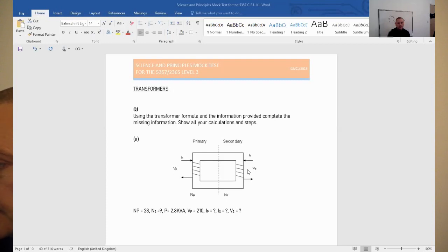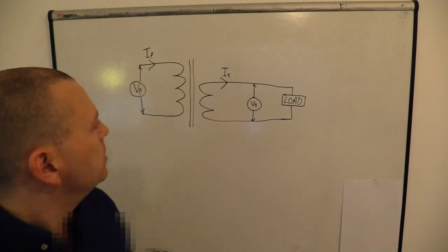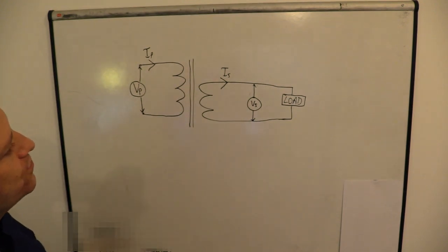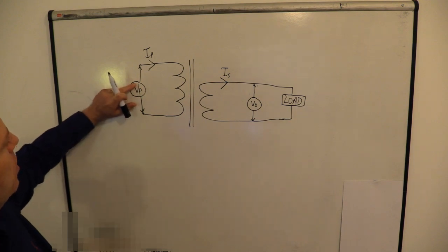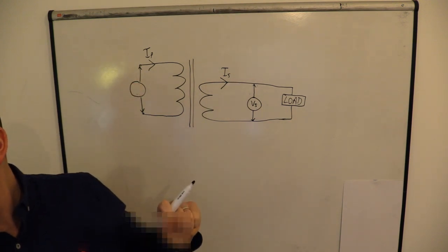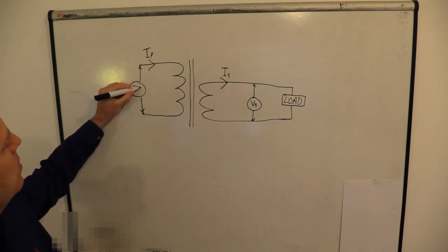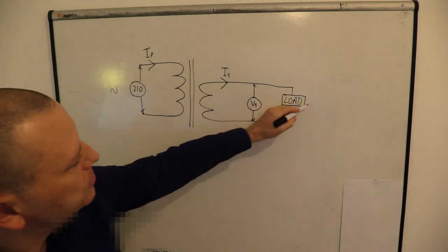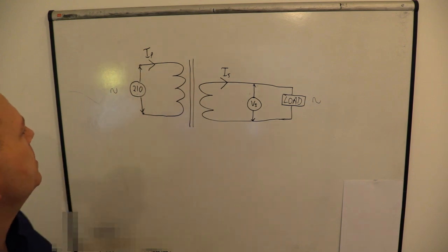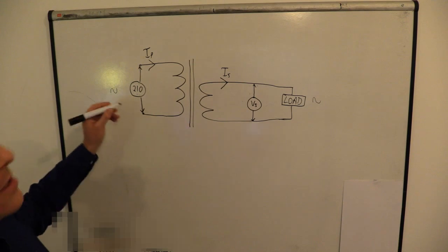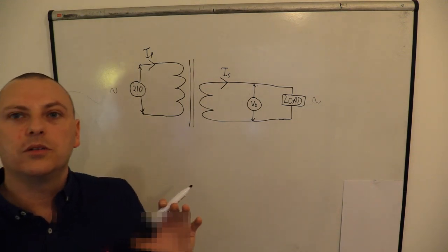The power is the same going in and going out, so we can use that to calculate some parameters. We know the primary voltage, but what we don't know is the primary current, the secondary current, or the secondary voltage. I've drawn it on the board. We've got a load pulling the power through the transformer. The primary voltage was 210 volts. This is AC obviously because it's a transformer. There are a couple of ways we can do this — we have what we need to make a ratio.